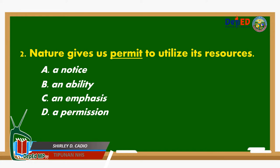Number 2. Nature gives us permit to utilize its resources. The underlined word is 'permit.' What is the meaning of the word permit? A. A notice. B. An ability. C. An emphasis. D. A permission.